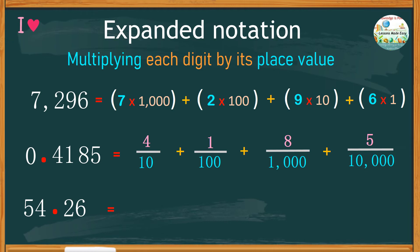for the whole number, we must multiply each digit by its place value. So, we have 5 times 10 plus 4 times 1. Then, add the decimal fraction 2 over 10 plus 6 over 100.